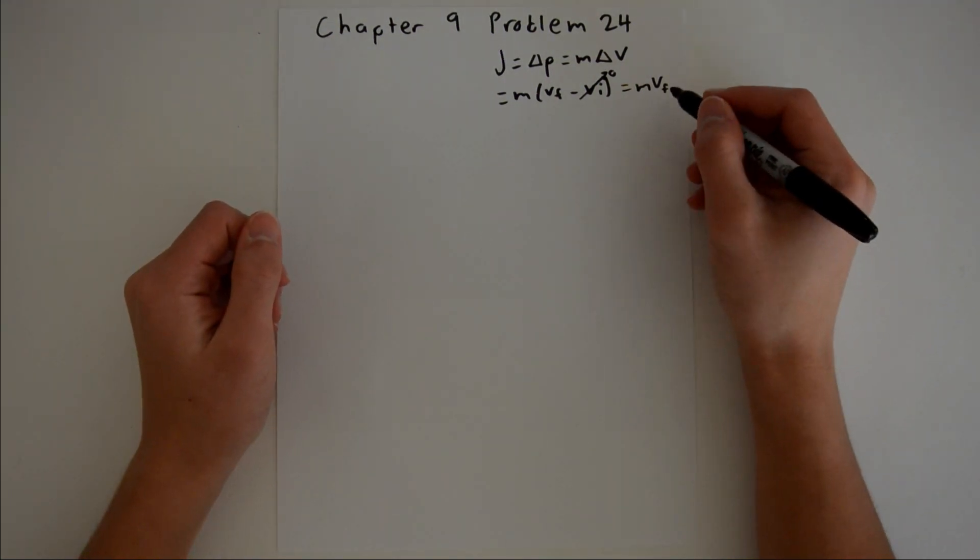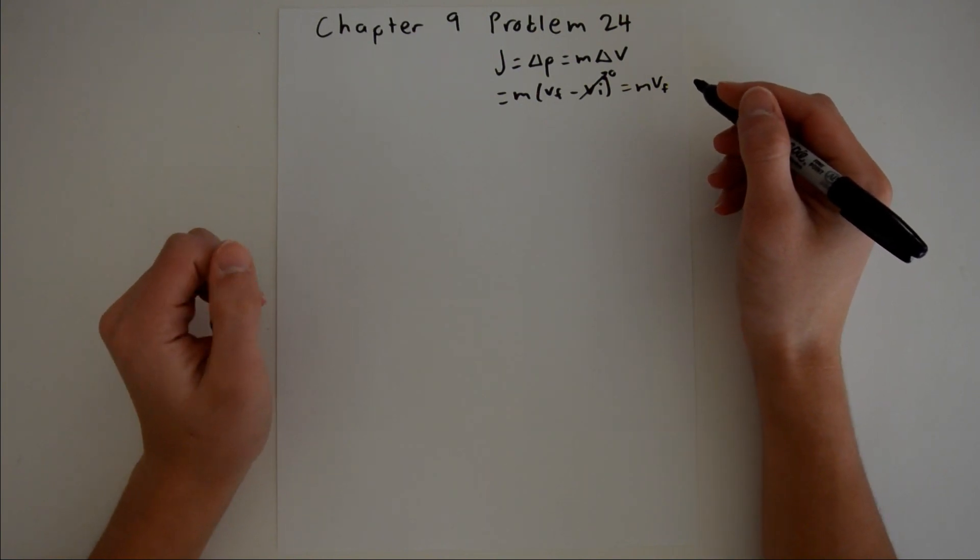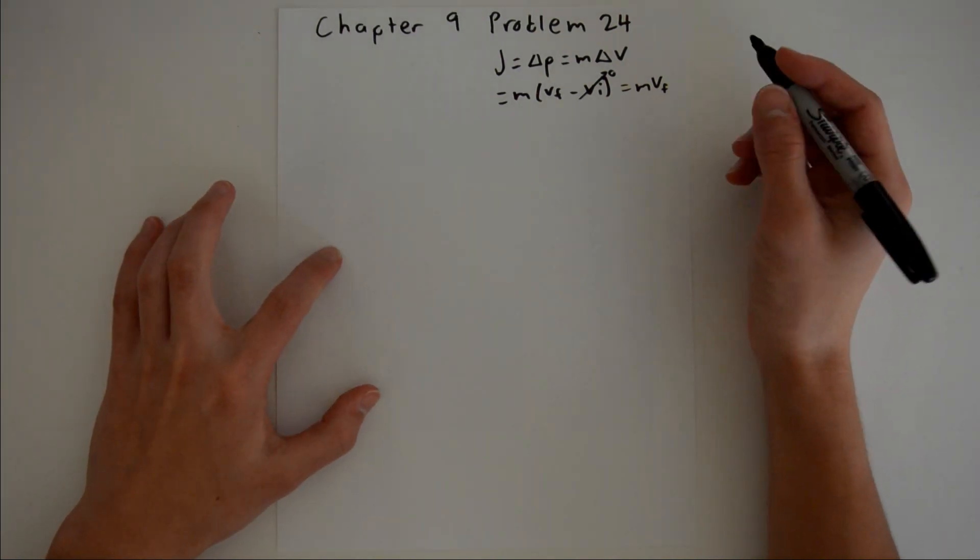Now we are given the mass, but not the final velocity, so we need to solve for that a different way, and we can do that using conservation of energy.